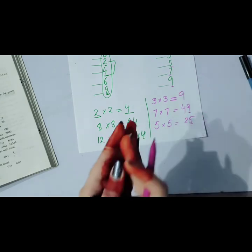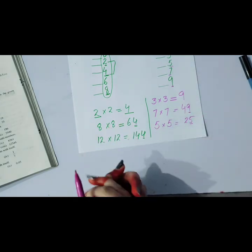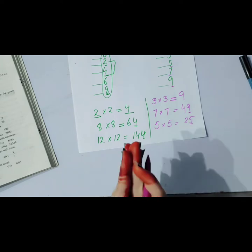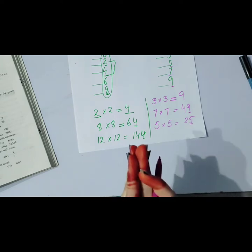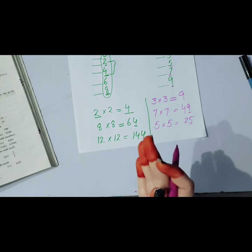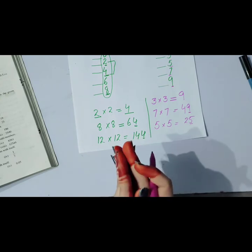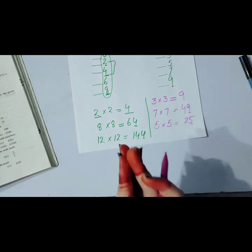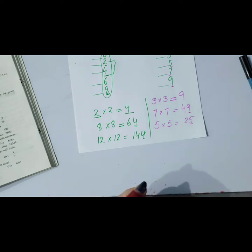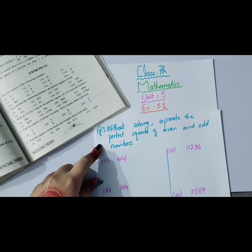So it's proven that the square of an even number is even, and the square of an odd number is odd. Now let's solve the parts of question number 3 without calculating, just by separating perfect squares of even and odd numbers.